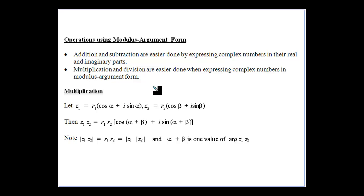In last week's work we did the arithmetic of complex numbers — multiplication and division. As we said, there are going to be easier ways to do multiplication and division. Addition and subtraction is much easier when using real and imaginary parts, but multiplication and division become much easier when we use modulus-argument form.